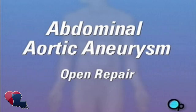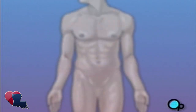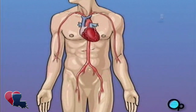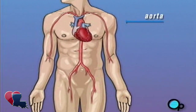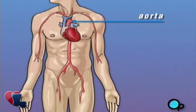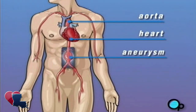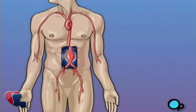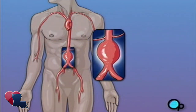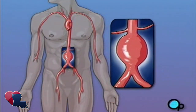Your doctor has recommended that you have surgery to treat an abdominal aortic aneurysm, but what does that actually mean? The aorta is the main blood vessel that carries oxygen-rich blood from your heart to the organs in your body. An aneurysm is a bulge or swelling in a blood vessel. This type of bulge occurs when a blood clot develops in the aorta, causing it to expand.